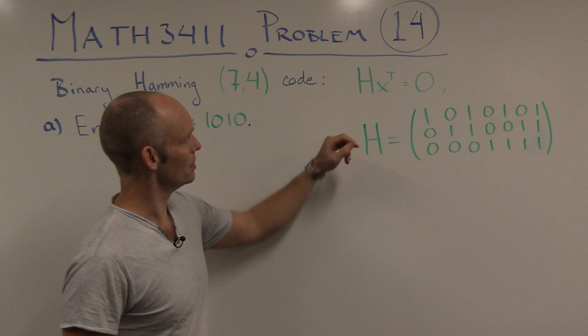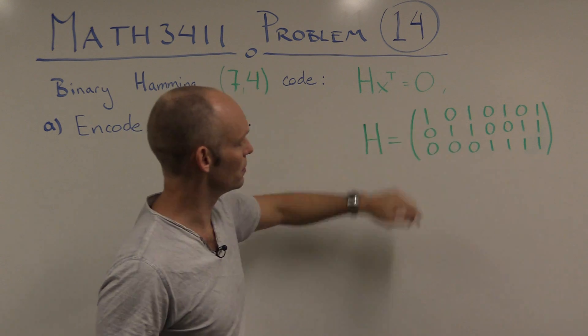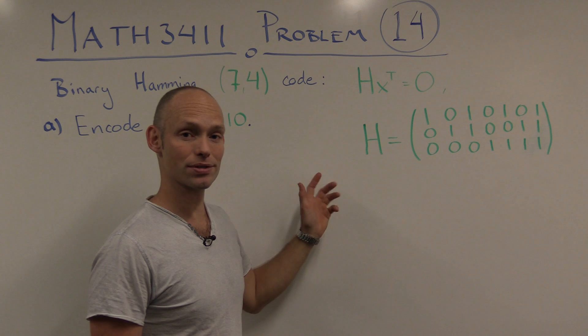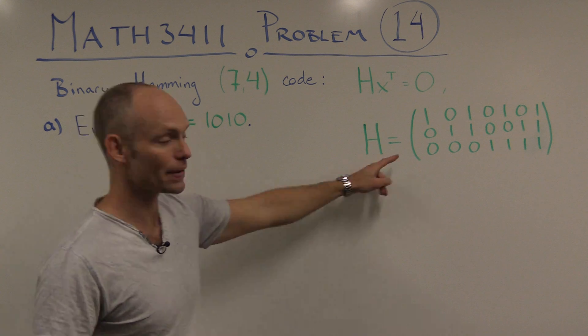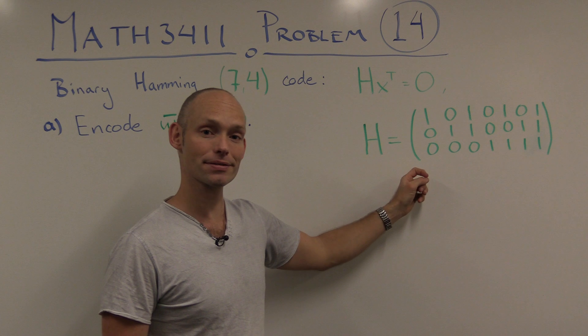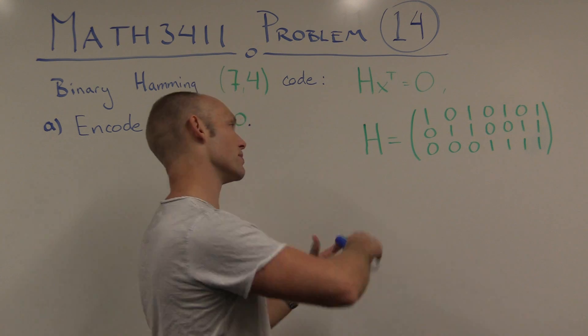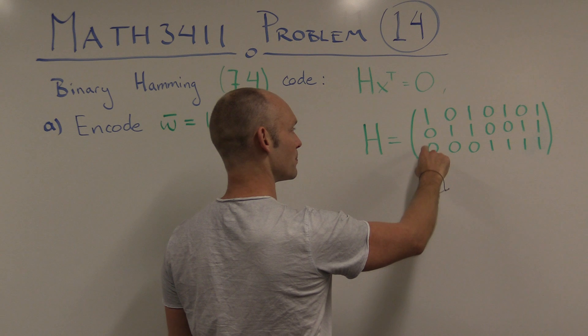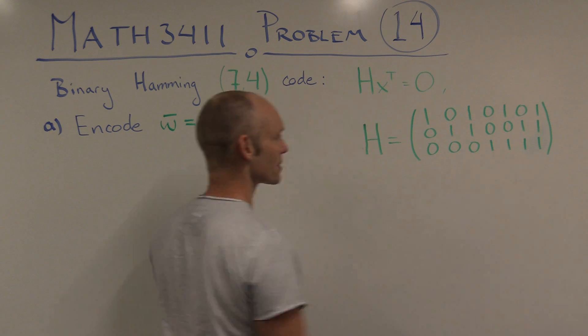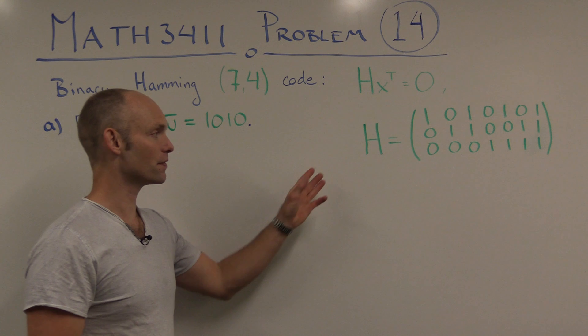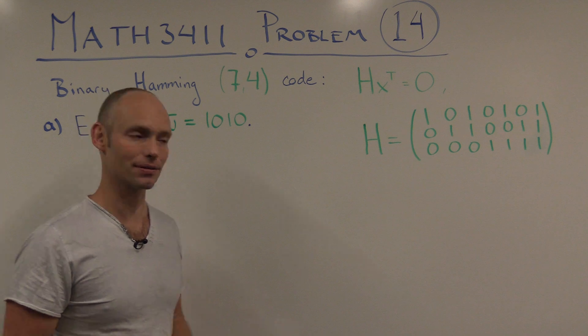So this is the code determined by this equation here, where we've got a matrix H with 7 columns and 3 rows, and the code words in our code are the code words that satisfy this matrix equation here. So if you look at the matrix, then each of the 7 columns are just the binary expansions of the numbers from 1 to 7. So if you look at it from a 90 degree angle, then you have 1 ones, 0 twos, and 0 fours. So this is number 1, this is number 2, 3, 4, 5, 6, and 7. That way of writing up the matrix is very useful for error correcting, as we'll see.